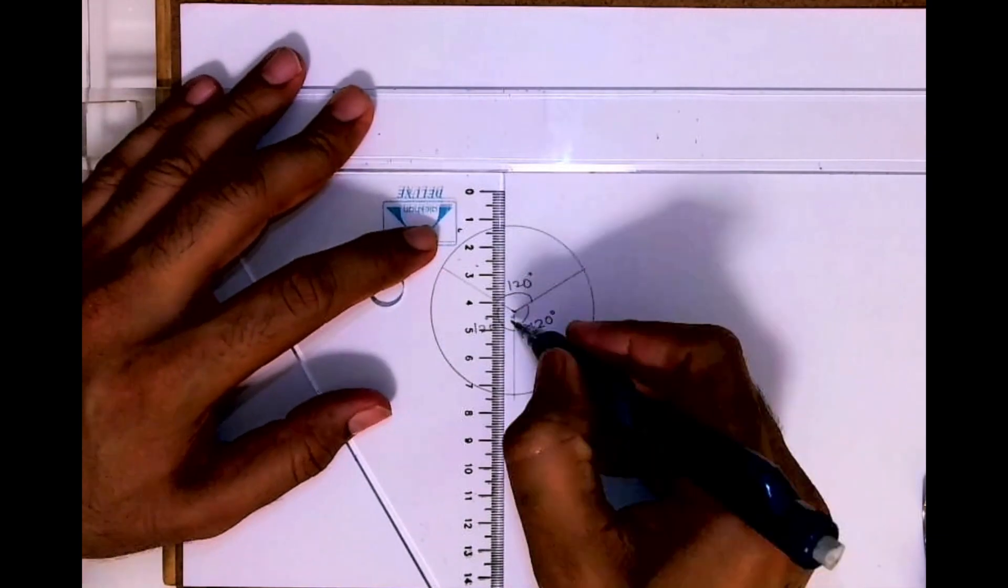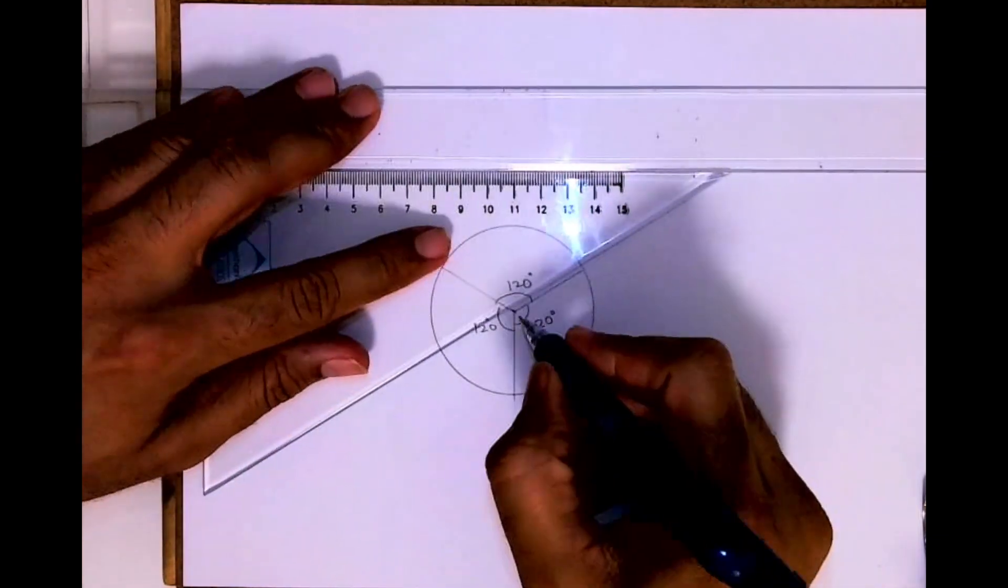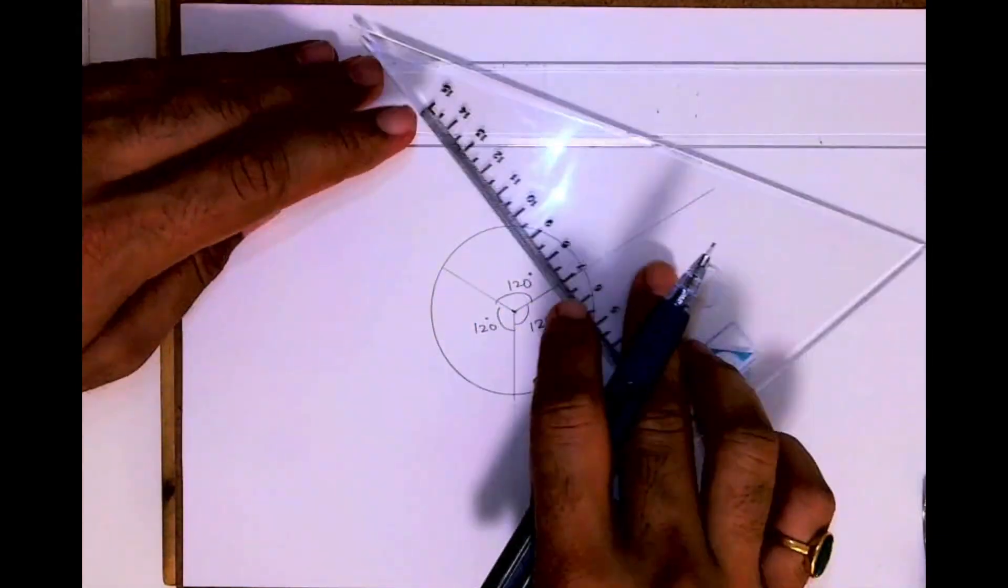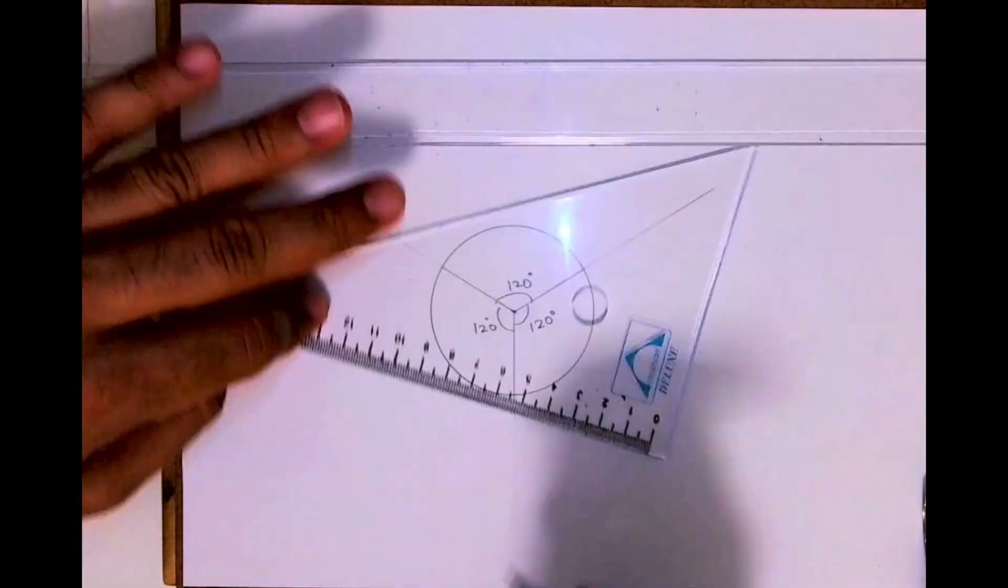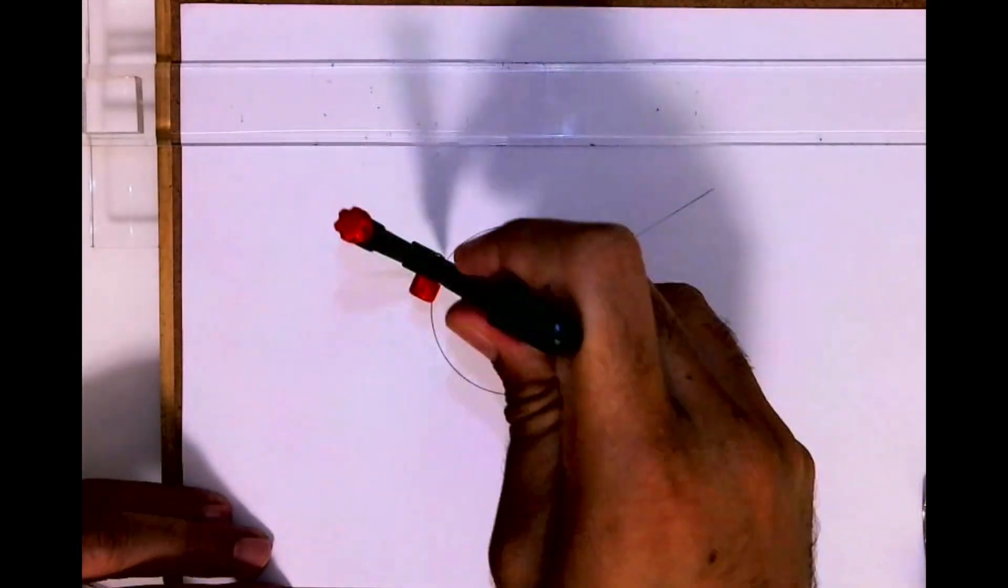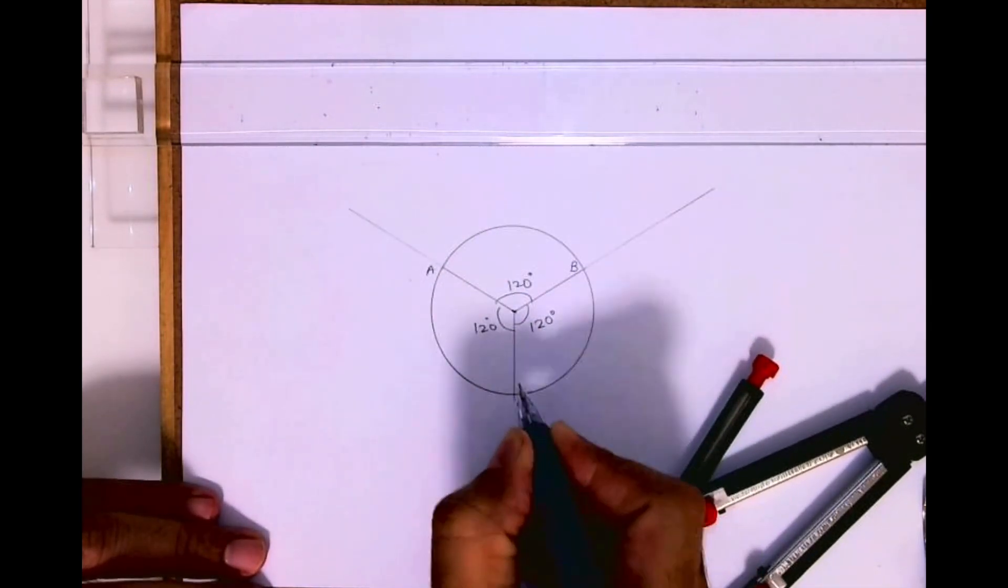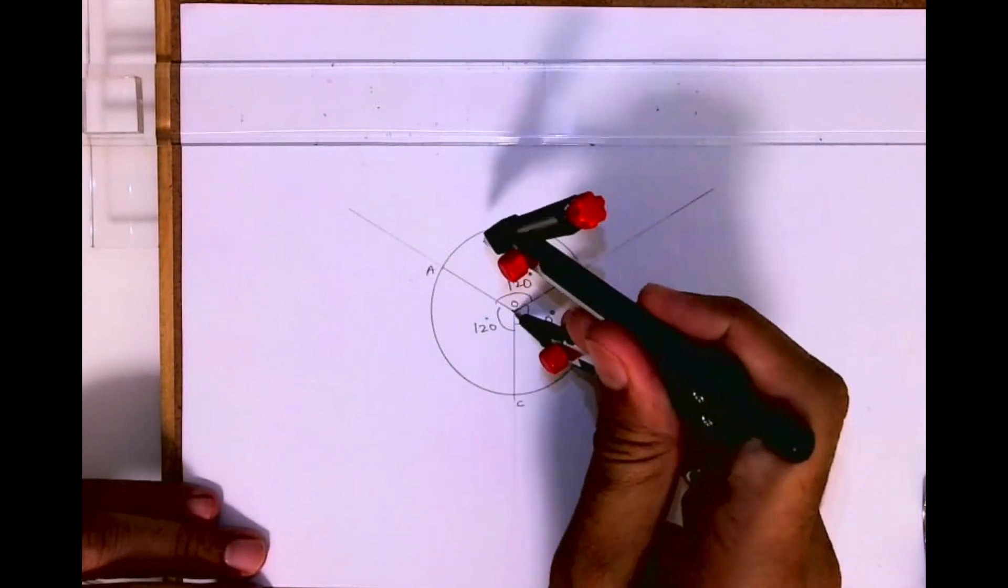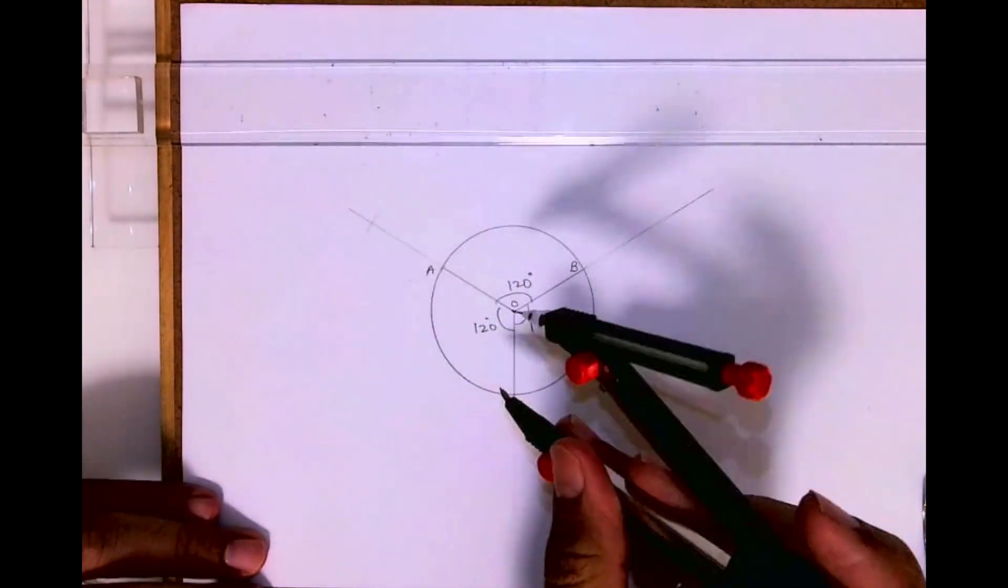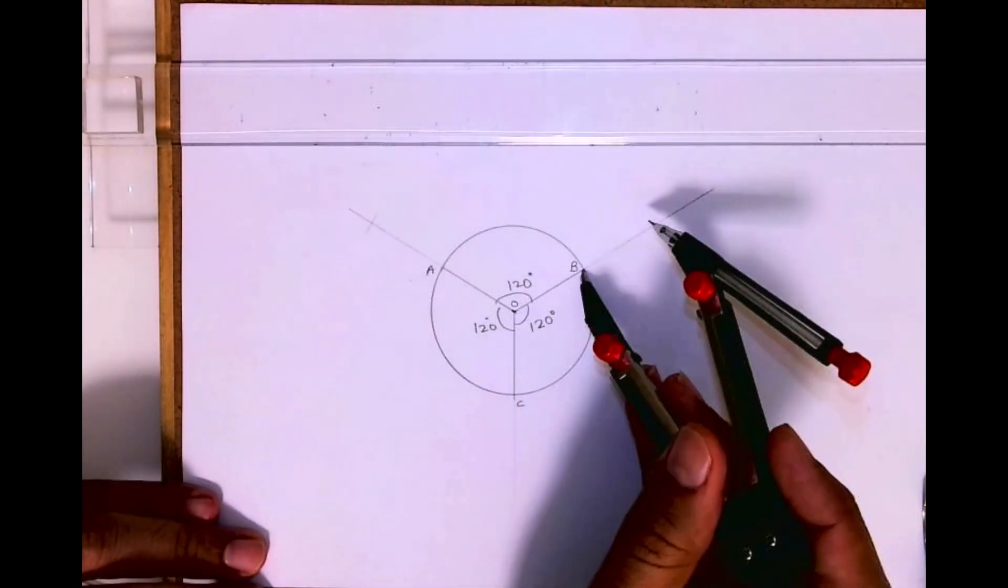Now after that I'll draw lines from each and every point like this. So basically I'm extending the line. This is ABC, then I'll take over to A and from A I will cut. So everywhere I'm extending the radius.